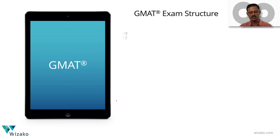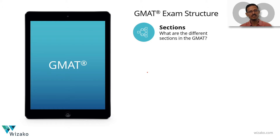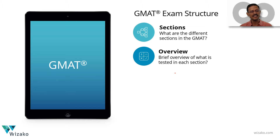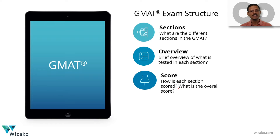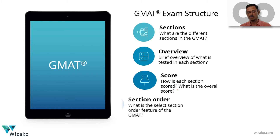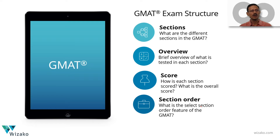We'll be looking at four aspects. We'll start with the different sections of the GMAT and get an overview about what is exactly tested in each of these sections, what is the competitive score for each section, and how long you would have to prepare to reach that number. Third, we'll look at how each section is scored and what is the overall GMAT score. And lastly, we'll look at the order in which you'll be able to take these different sections.